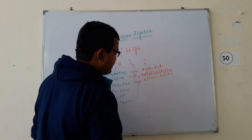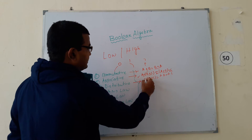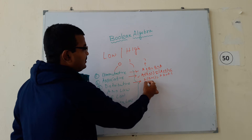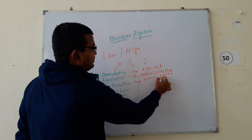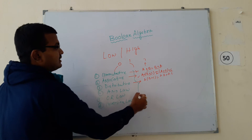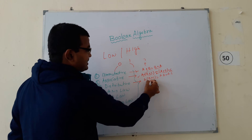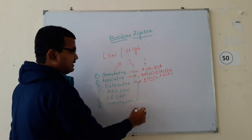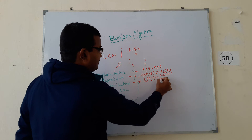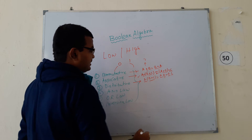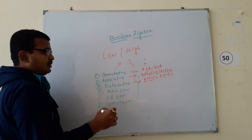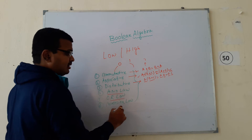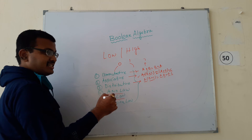Next is distributive law. The statement is: A into (B plus C) is equal to A dot B plus A dot C. Means, suppose B plus C operation occurs first, then after that we multiply A. This result is equal to A dot B plus A dot C. This law is known as distributive law.